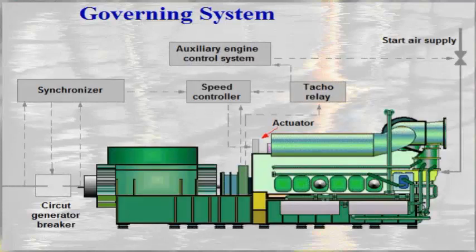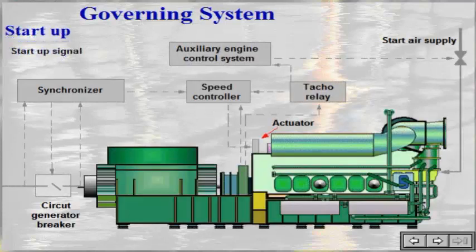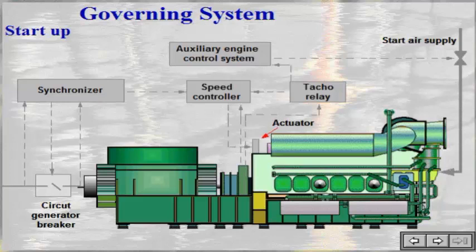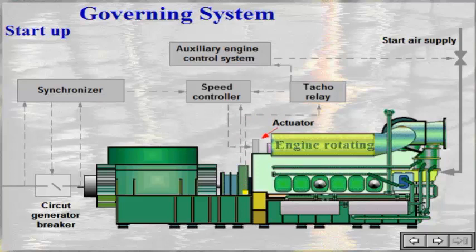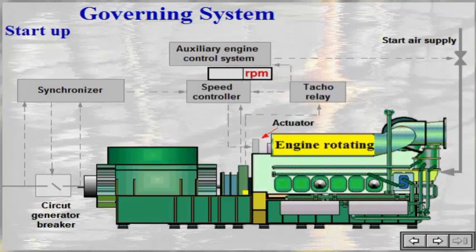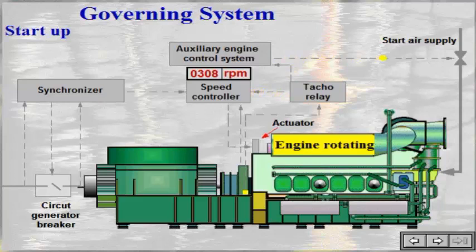The governing system, upon a start signal from the ship's auxiliary engine control system, leads starting air to the engine. The tackle relay receives a signal from a magnetic pickup on the flywheel cover, which indicates the engine's speed. When the speed exceeds 300 RPM, the tackle relay sends a signal to the speed controller indicating the engine is running.